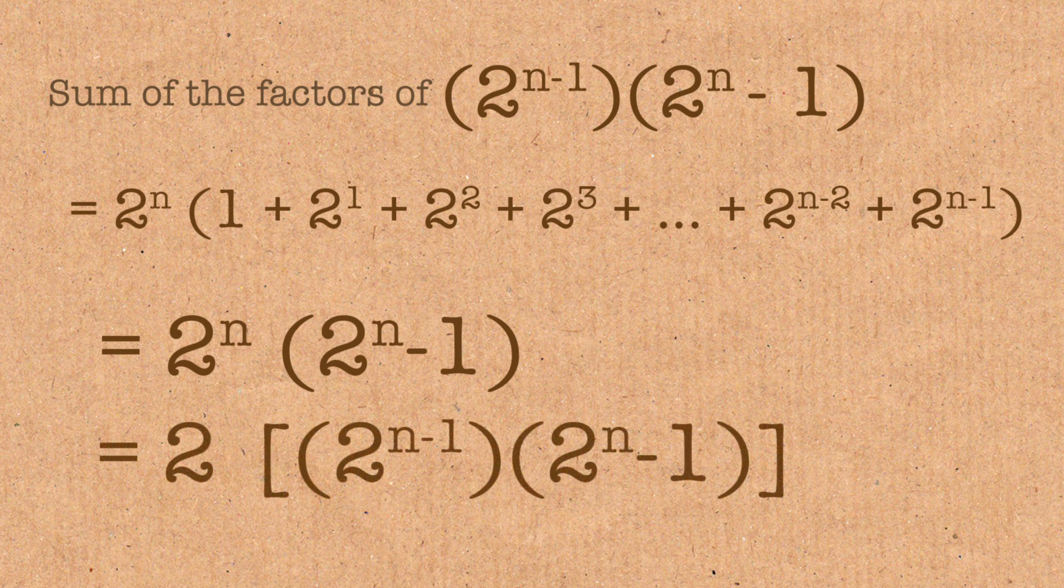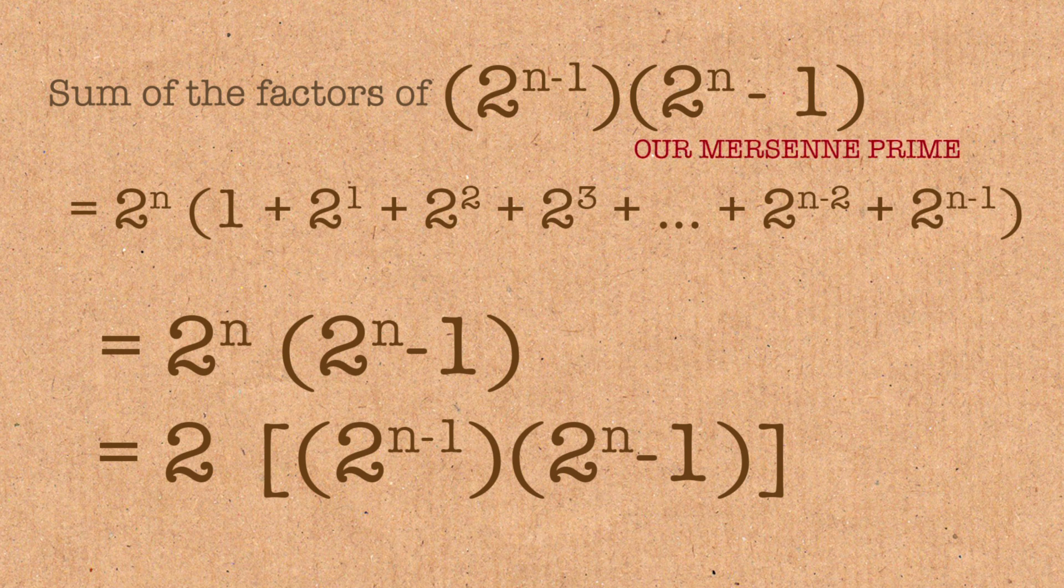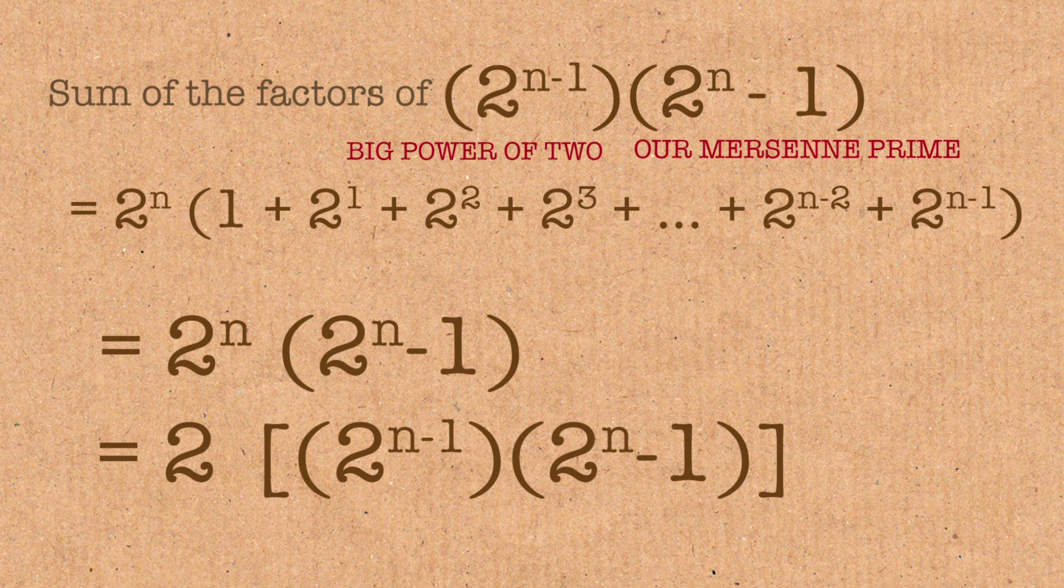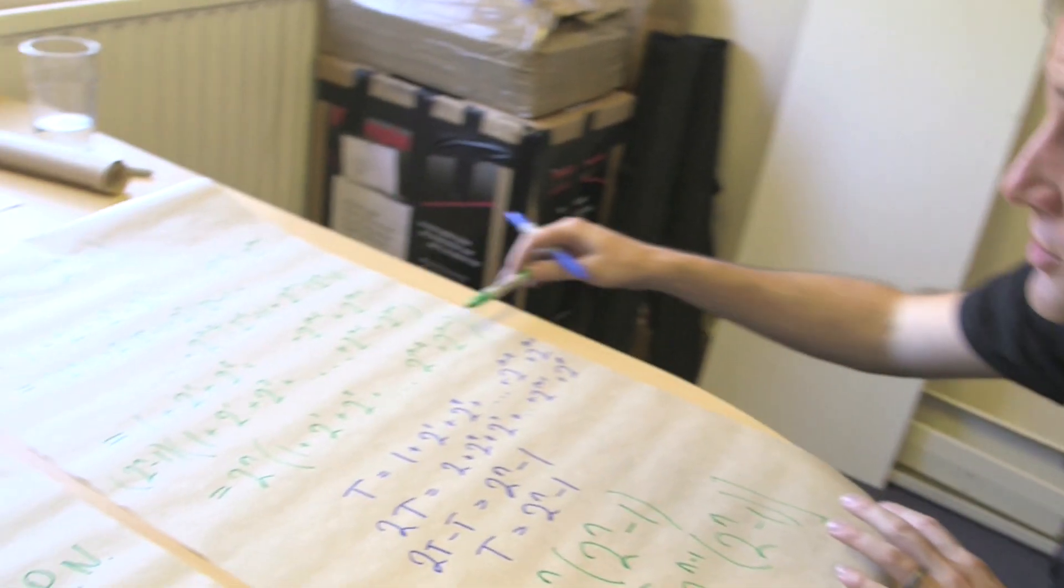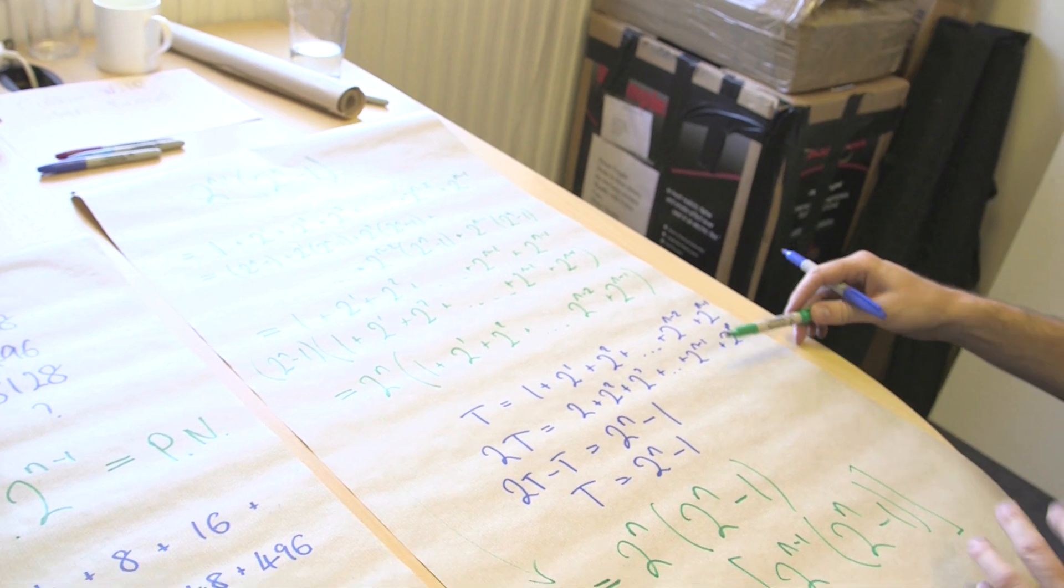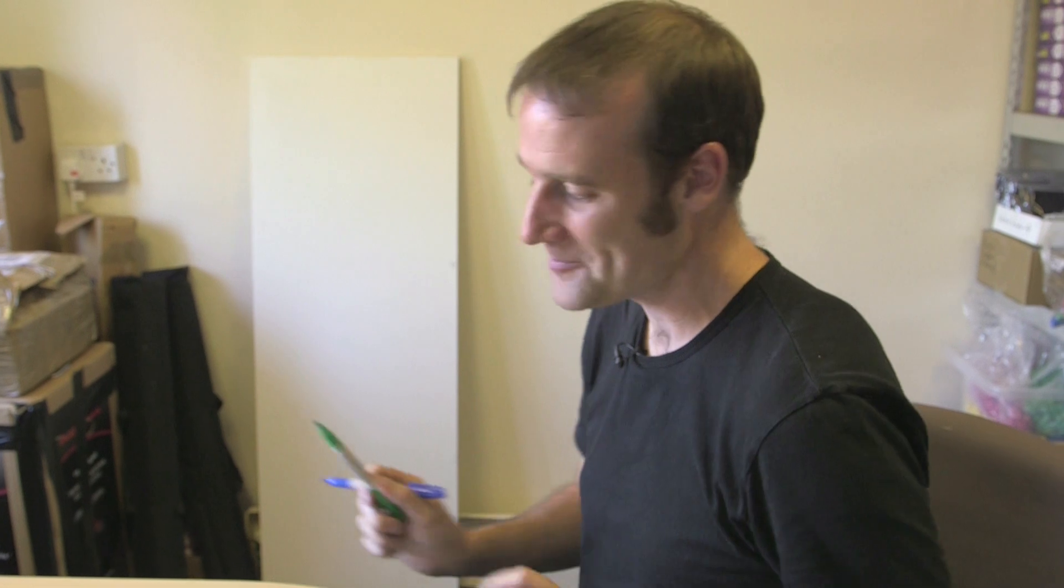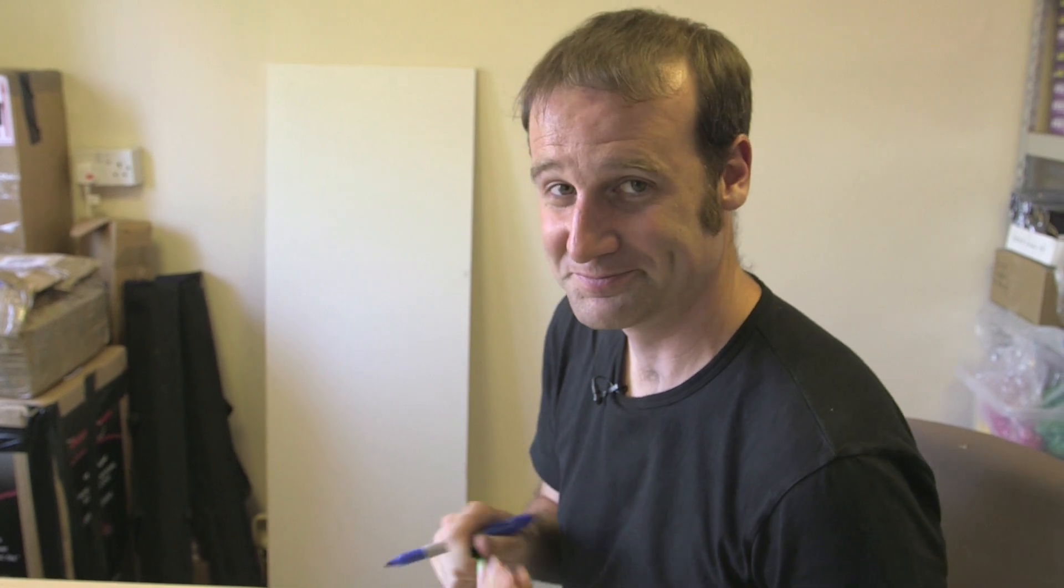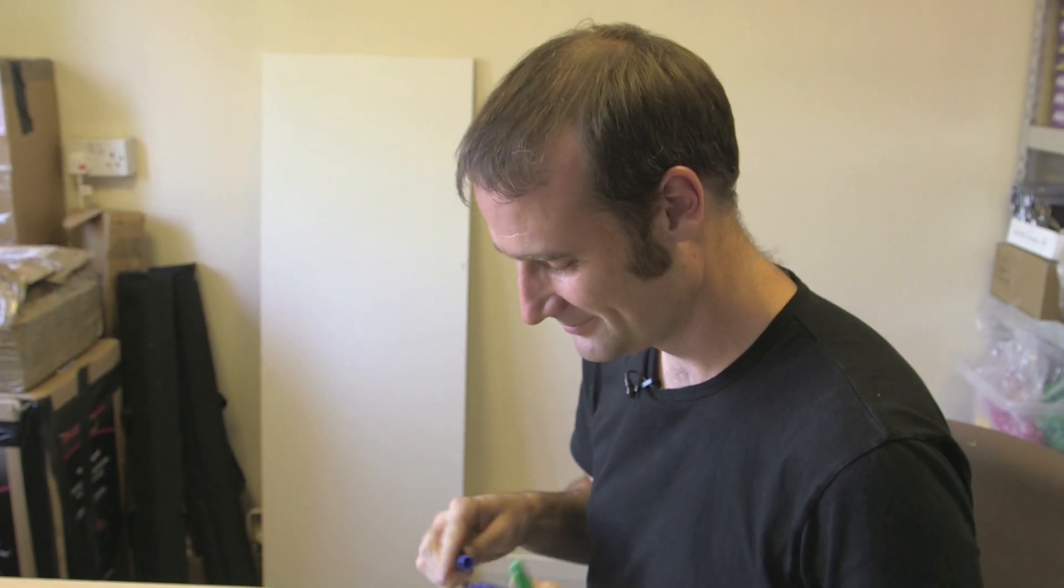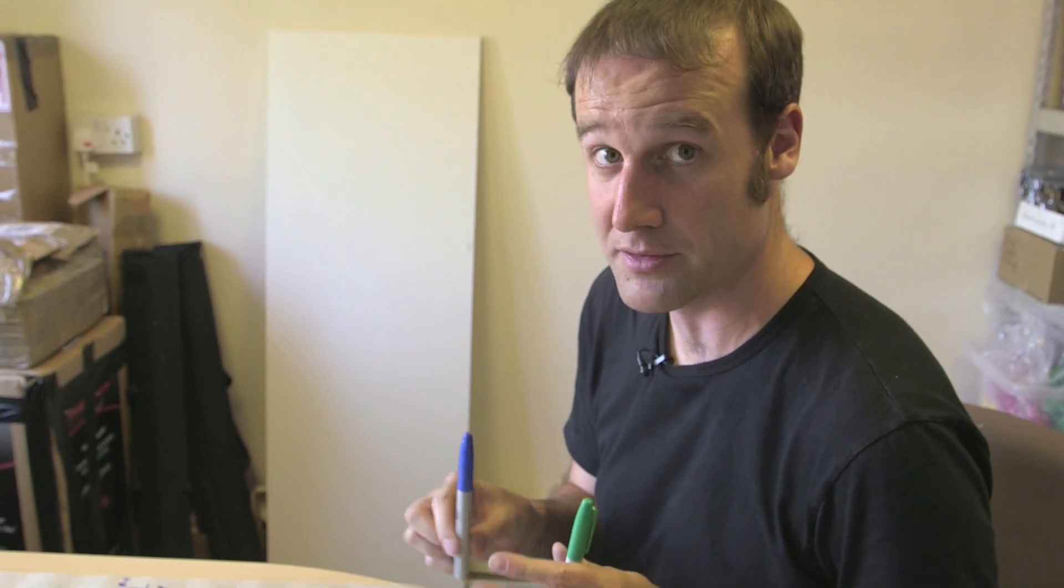And so that is the proof that if you have a Mersenne prime, 2 to the N minus 1, and you multiply it by 2 to the N minus 1, you're guaranteed to get a perfect number, because if you take all the factors of that expression, and then you add them all together, you get back to twice the original expression, which is our definition of a perfect number. And so people talk about the fact that there's a link between Mersenne primes and perfect numbers, but now we have managed to prove it. That's... I'm so pleased, I'm going to put the lids back onto both of the pens.